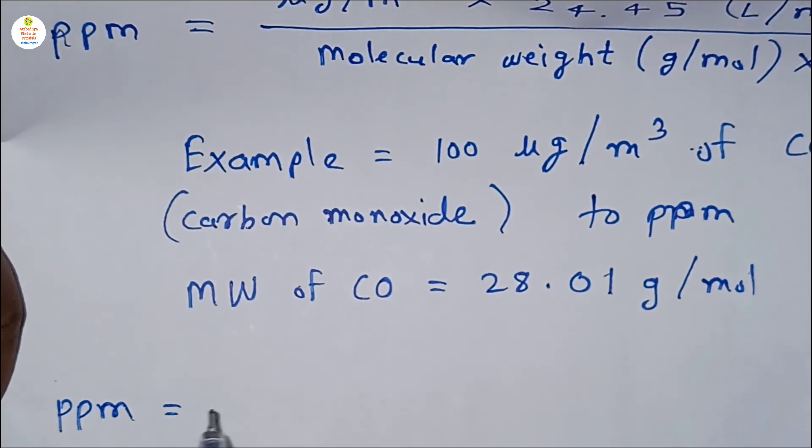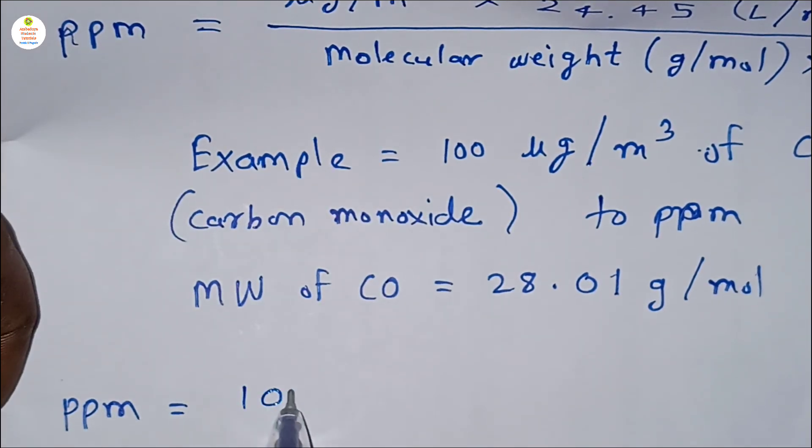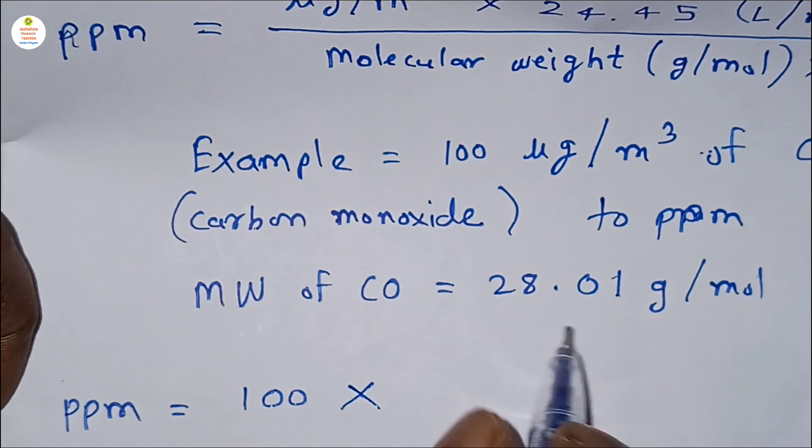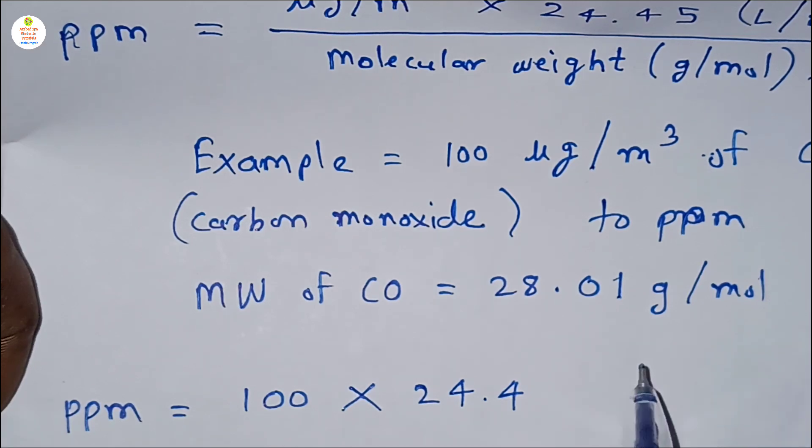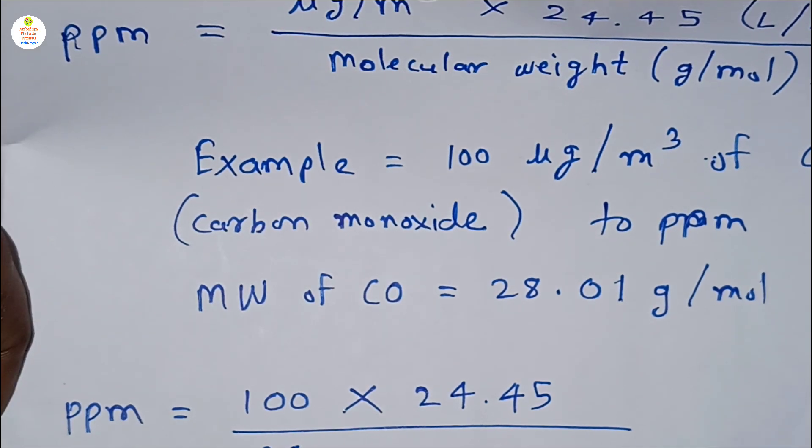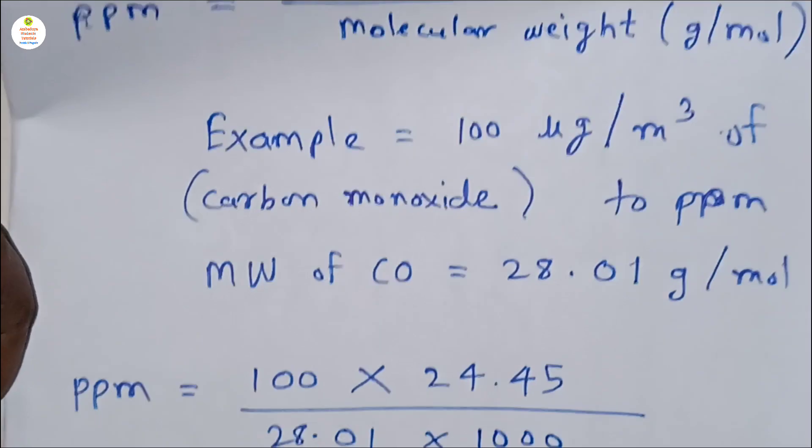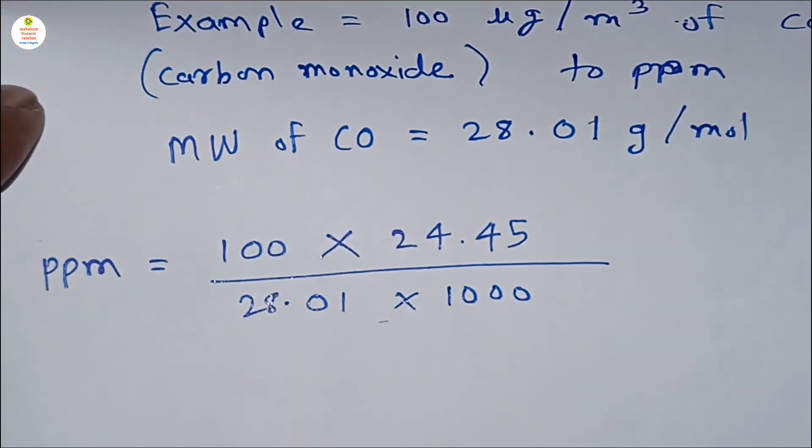So now we will put all the values in ppm formula. PPM is equal to, we need to put the value 100 microgram per meter cube into 24.45, molecular volume, molar volume of ideal gas, 24.45, then molecular weight is here 28.01 into 1000.